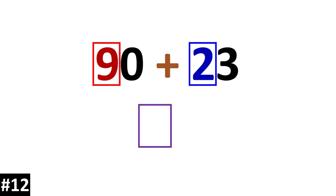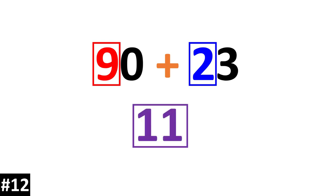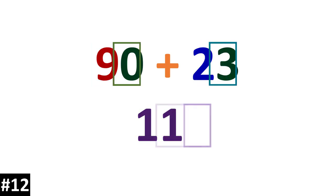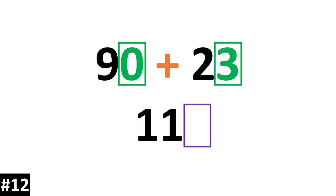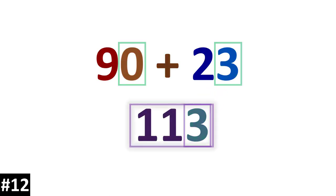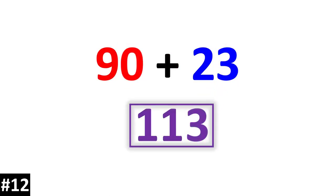90 plus 23. We have 9 tens plus 2 tens which gives us 11 tens. Then we look to the ones: 3. The answer is 113.